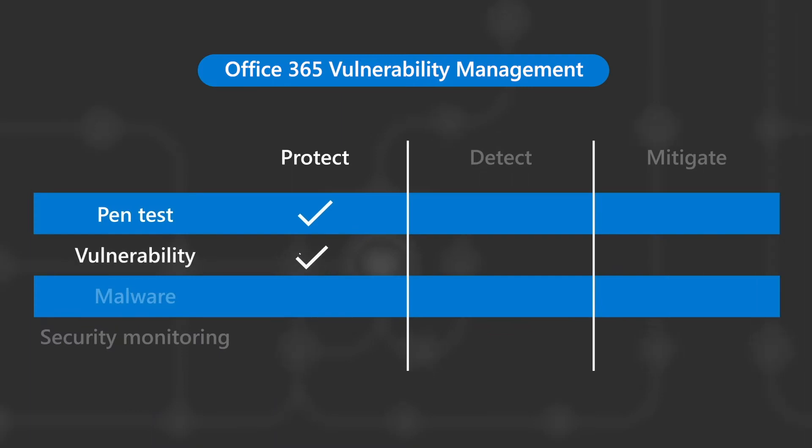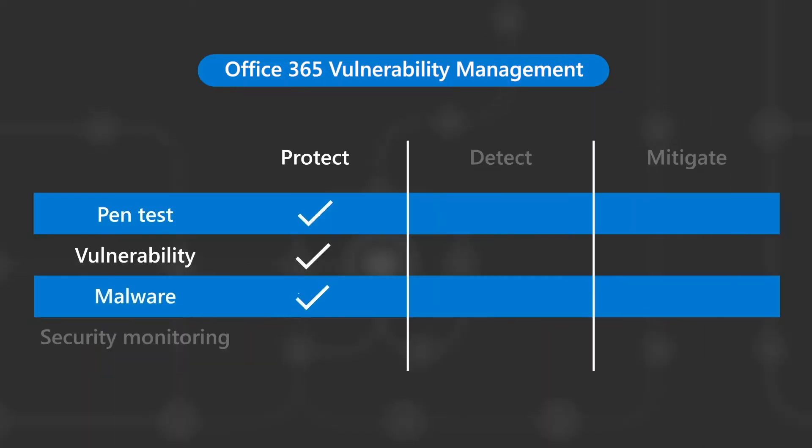Continuous penetration testing is conducted by Microsoft's red and blue teams from inside and outside the environment. Vulnerability scanning software is installed on all Office 365 assets to scan for vulnerabilities published in Common Vulnerabilities and Exposures, or CVE databases. Anti-malware software detects and prevents the introduction of computer malware — namely viruses, rootkits, worms, or other malicious software — on the service systems. Anti-malware software is installed as part of the initial build, and its signature updates are downloaded daily from the vendor's latest definition site.